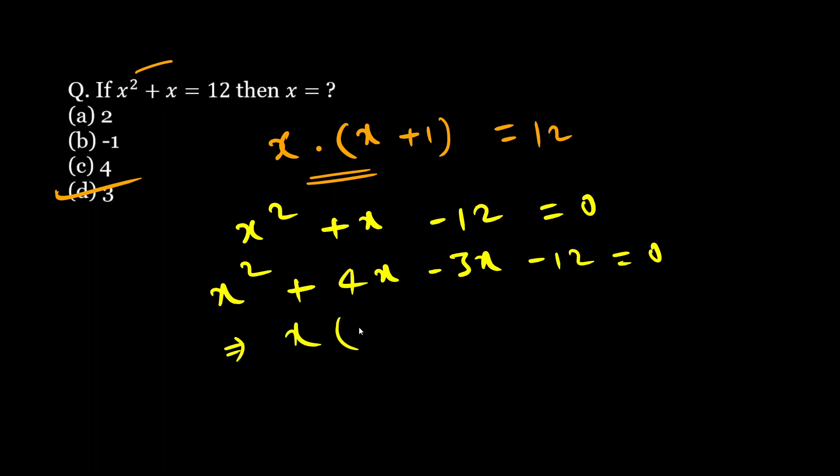From here I will take x common, here I will take minus 3 common. From here I can rewrite this as x plus 4 into x minus 3 equal to 0.